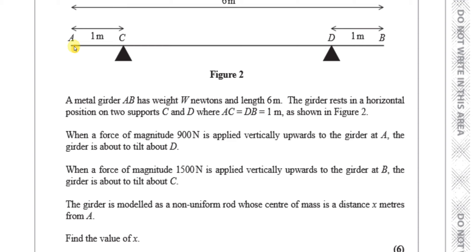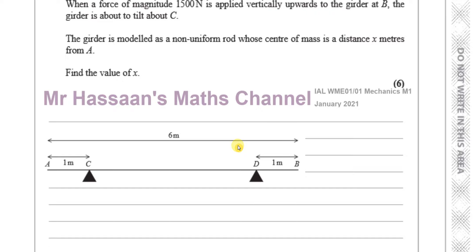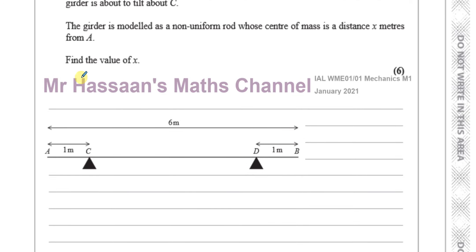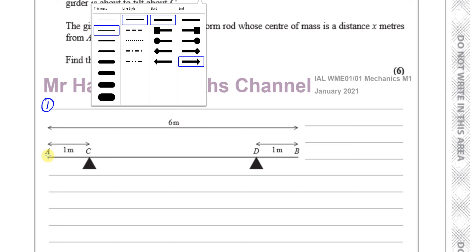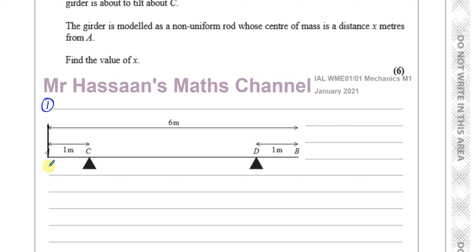Case 1: we have a force of 900 N acting vertically upwards at A, and it's about to tilt about D. I've drawn the diagram with the weight W Newtons acting at the center of mass somewhere between C and D, and the reaction forces at C and D. This is a bit different because normally forces hang downward — here we've got forces acting upwards.